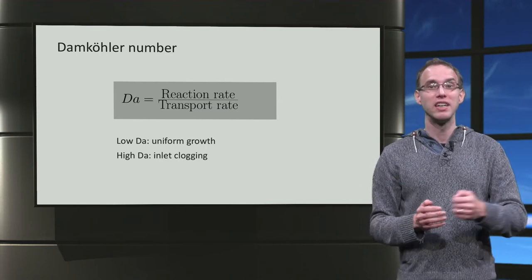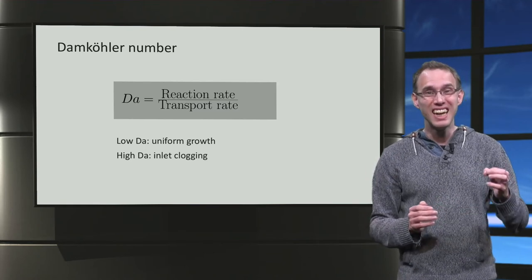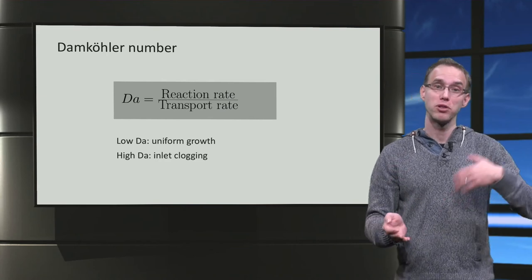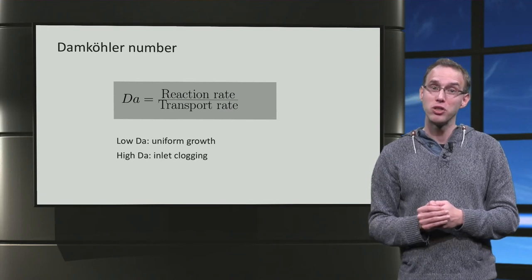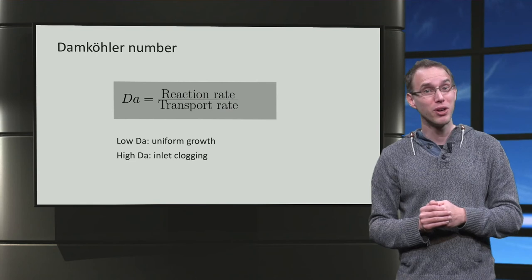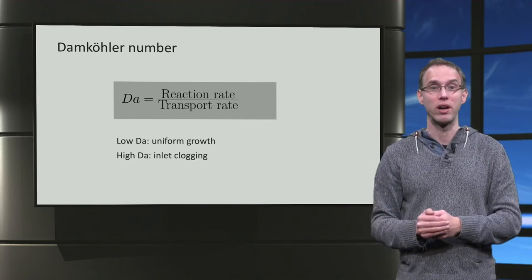Say we fix the reaction rate. Then lowering the Damköhler number means increasing the transport rate. So, low Damköhler means high transport, so no depletion. Low enough Damköhler number yields uniform growth. For high Damköhler numbers we have the other scenario, preferential growth at the inlet and hence inlet clogging.